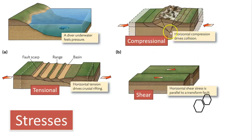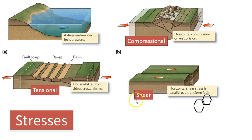Compressional stress causes a body of rock to be squeezed, and this mostly happens along convergent plate boundaries. Tensional stress pulls a body of rock apart in opposite directions, which would most be associated with divergent plate boundaries. Shear stress is a bit like tearing, where one body of rock is moved horizontally past another in opposite directions — this happens along transform boundaries or transform faults.